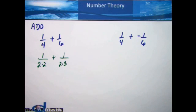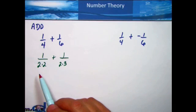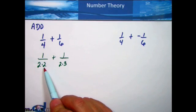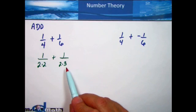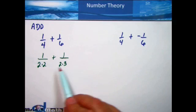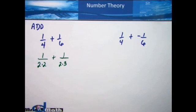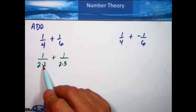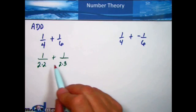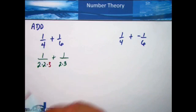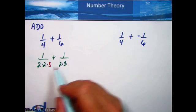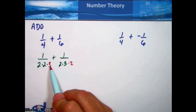The next step is to use the least common multiple to get the denominators to be the same. You may have heard this called the lowest common denominator, but we're really just using the least common multiple. We've got two 2s in the first fraction and a 2 and a 3 in the second fraction. To get them the same, think about the least common multiple: two 2s and one 3. The first fraction is going to need a 3, making it two 2s and a 3. The second fraction is going to need another 2. Now they're the same: two 2s and a 3.